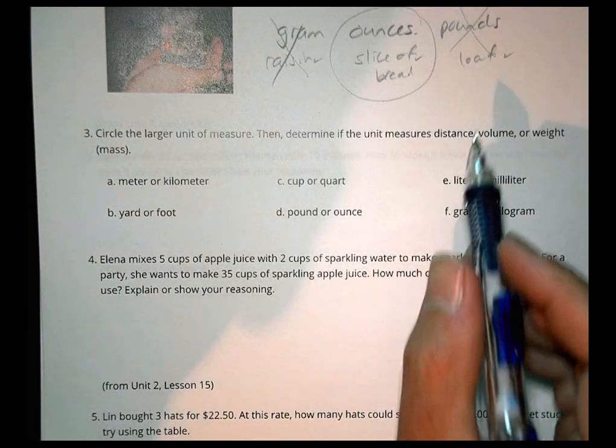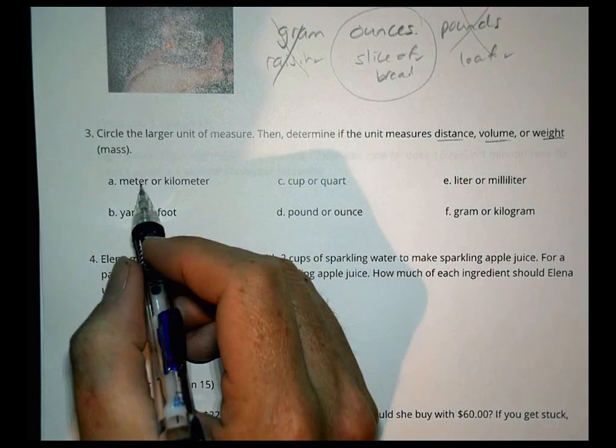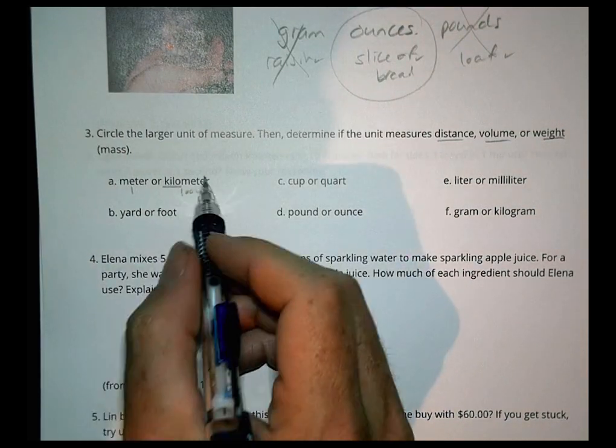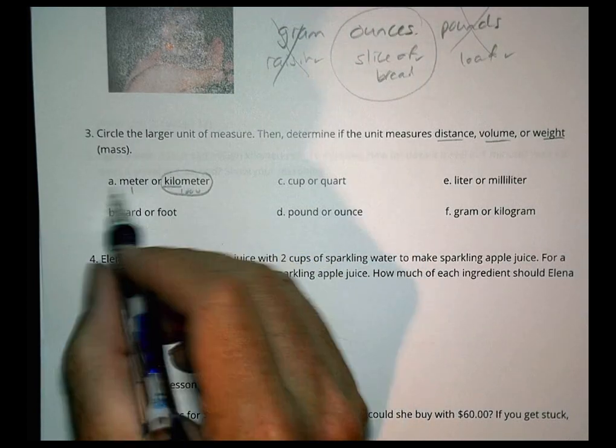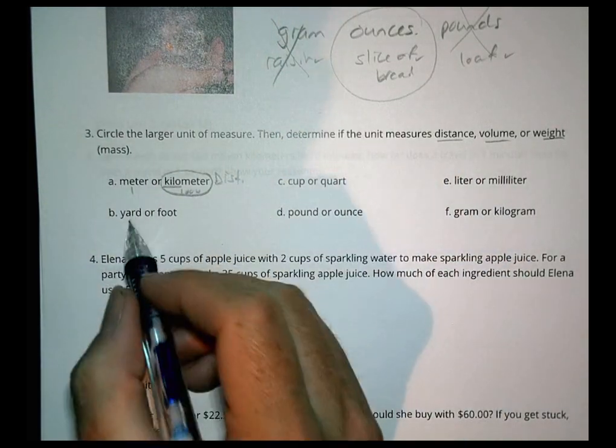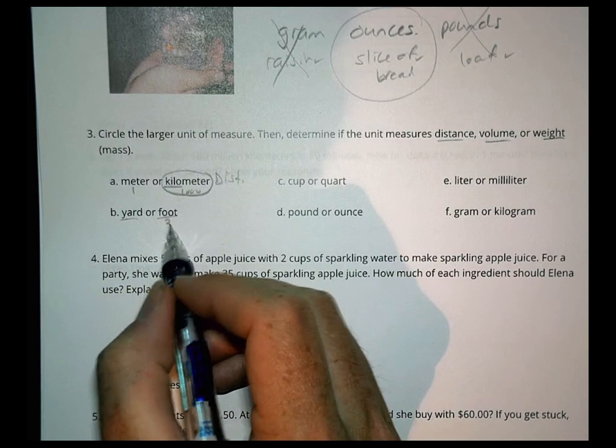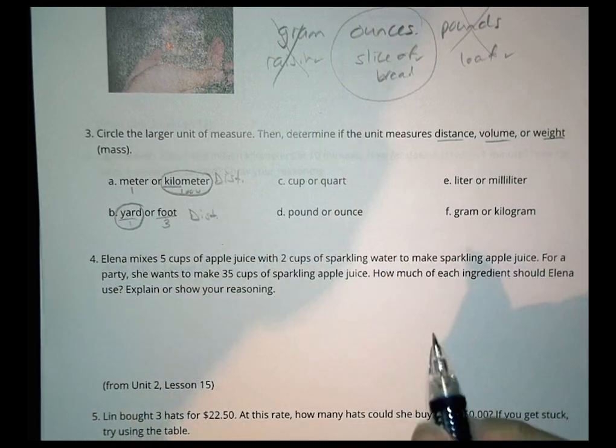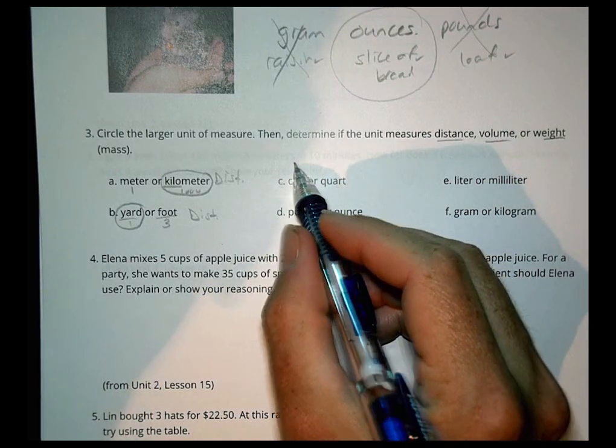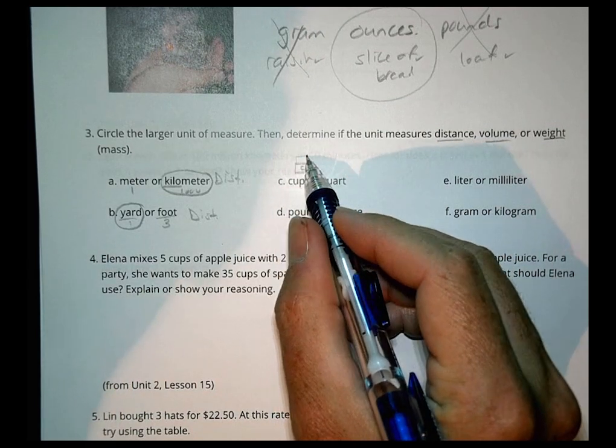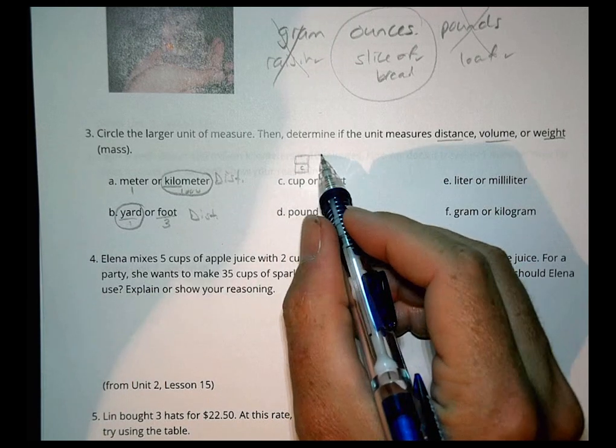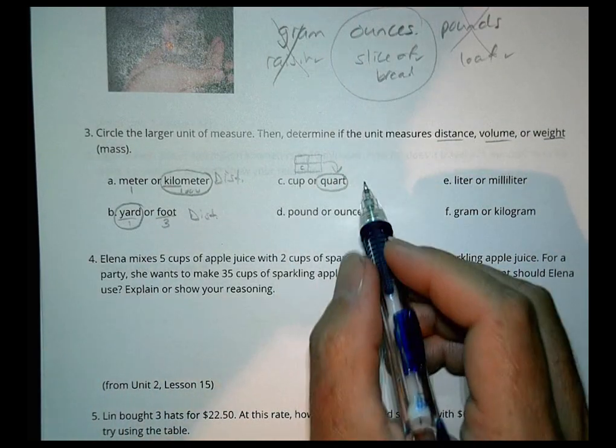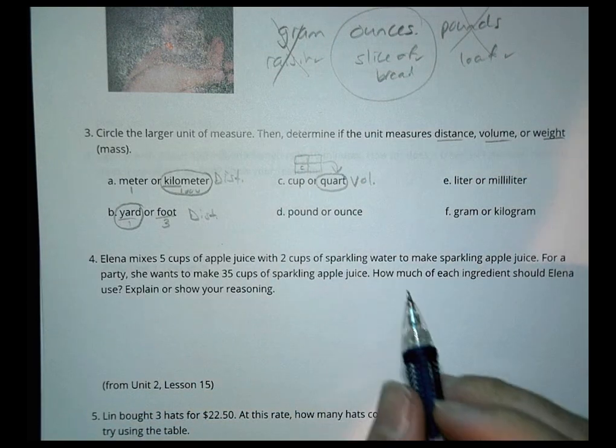Number three. Circle the larger unit of measure. Then determine if it measures distance, volume, or weight. Alright, so I have a meter and a kilometer. Kilo means thousand. So this is one, and this is a thousand of the same thing. So I'm going to go with the kilometer being bigger than a meter. And because of what it is, this actually would measure distance. Here we have a yard, and we have a foot, and we know that it takes three of these to make one of those. So this is going to be the larger one, and again, that measures distance. A cup and a quart. Alright, so if you think back, maybe you remember this from other learning. If you have a cup and I have another cup, I actually end up with what we call a pint. But then if I take four of those together, I actually end up with a quart. So the quart is the larger one than that. And that's going to measure, because it's a liquid, it's going to measure volume.